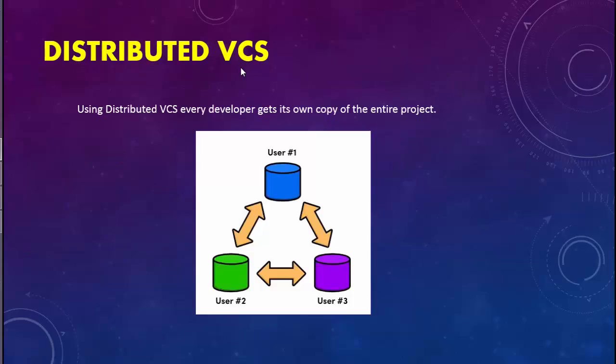So they thought of a new version control system called the Distributed Version Control System, which is way more powerful than the Centralized VCS — and Git is also a Distributed Version Control System. In the Distributed Version Control System, every developer gets their own complete copy of the entire project. As you can see in this diagram, there is not just one copy of the repository — every user has their own copy of the project on their local machine, working in isolation.